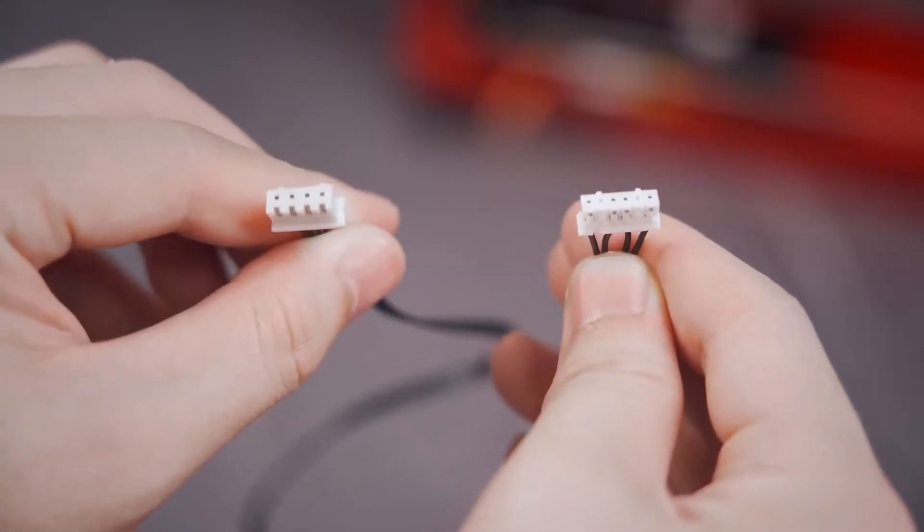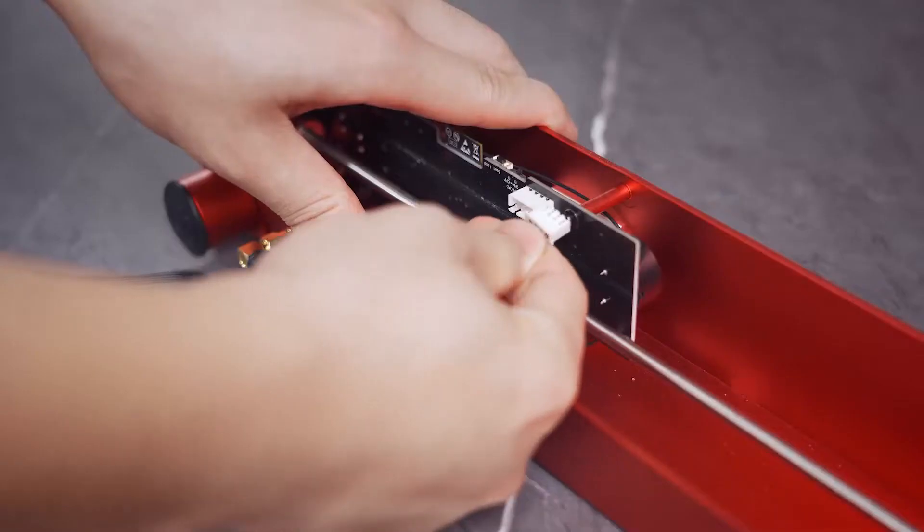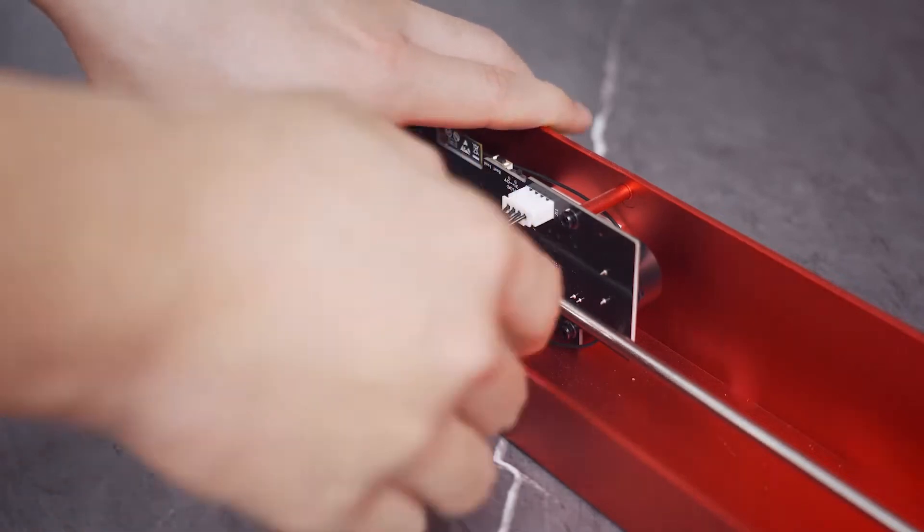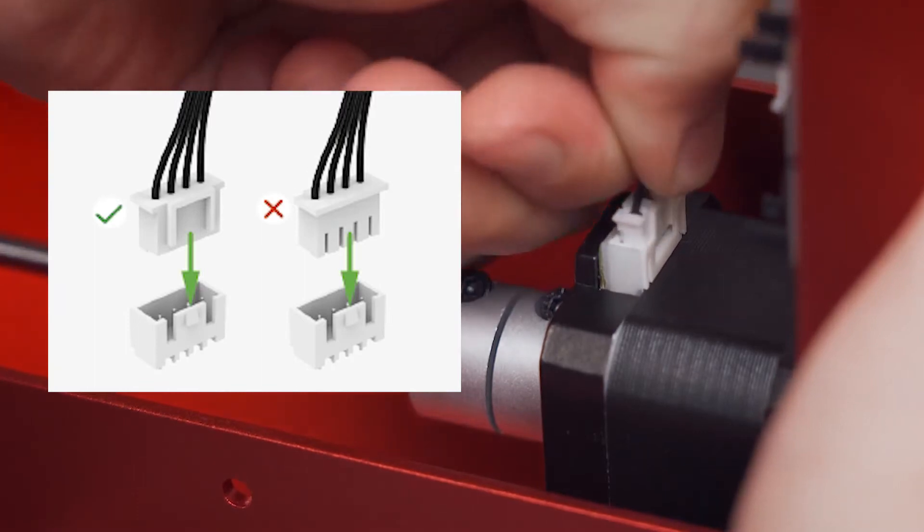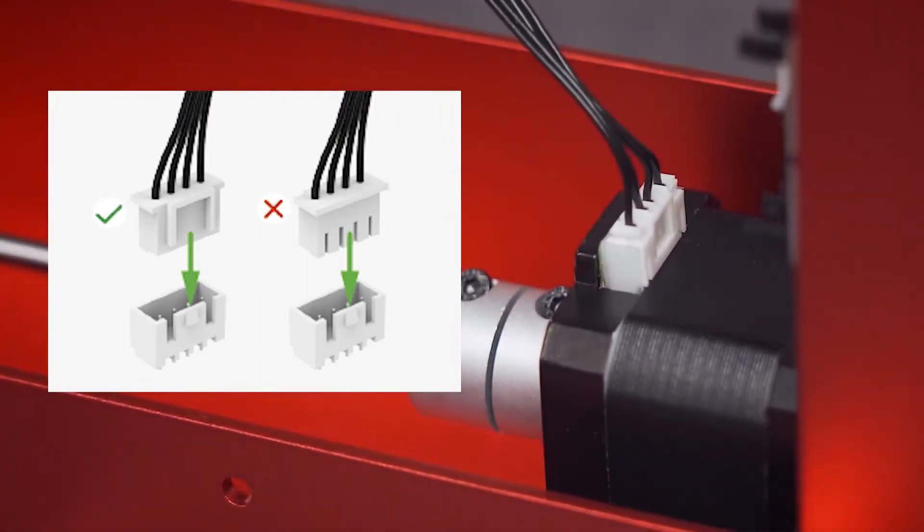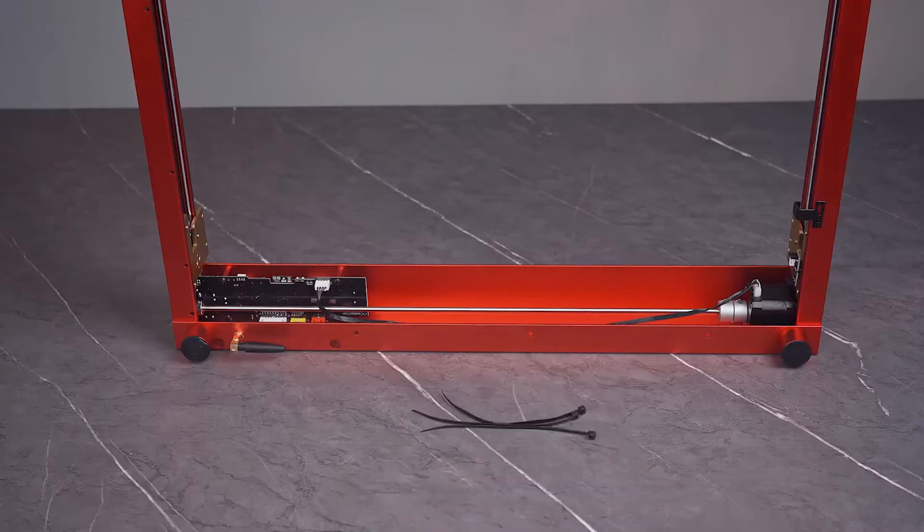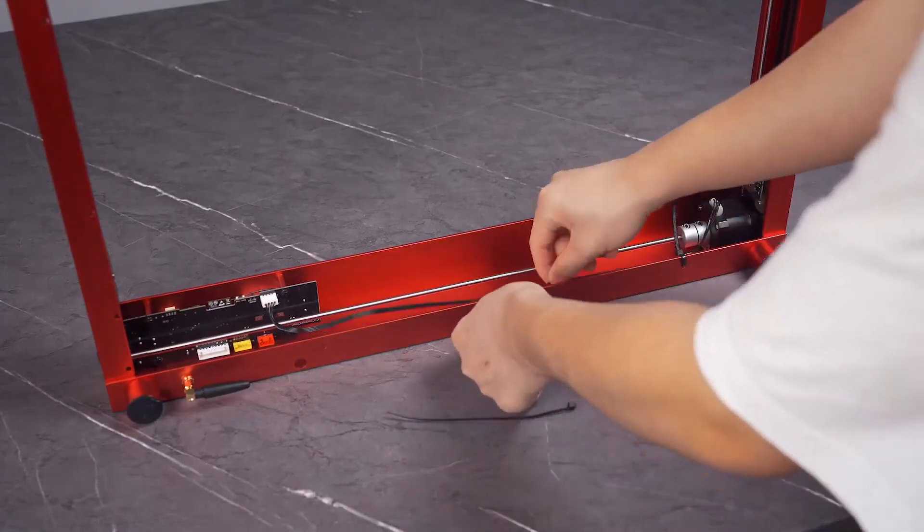Connect the motor on the left plate to the main control board. Insert the connectors into the port on the main control board and the one on the motor, respectively. Pay attention to the front and back sides of the connector. Insert it properly. Use cable ties to fix the motor cable on the front plate.